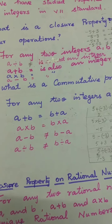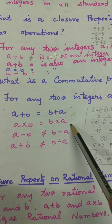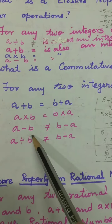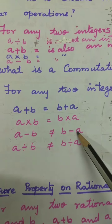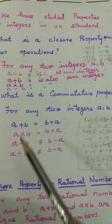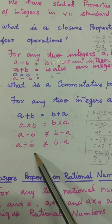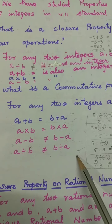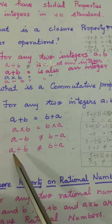For multiplication: 5 threes are 15, and 3 fives are 15. So commutative property is true in multiplication. Then take A minus B: 5 minus 3 is 2, but 3 minus 5 is minus 2, so they are not equal — subtraction is not commutative. For A divided by B: 5 by 3 is not equal to 3 by 5, so division is also not commutative. Commutative property is not true in subtraction and division.